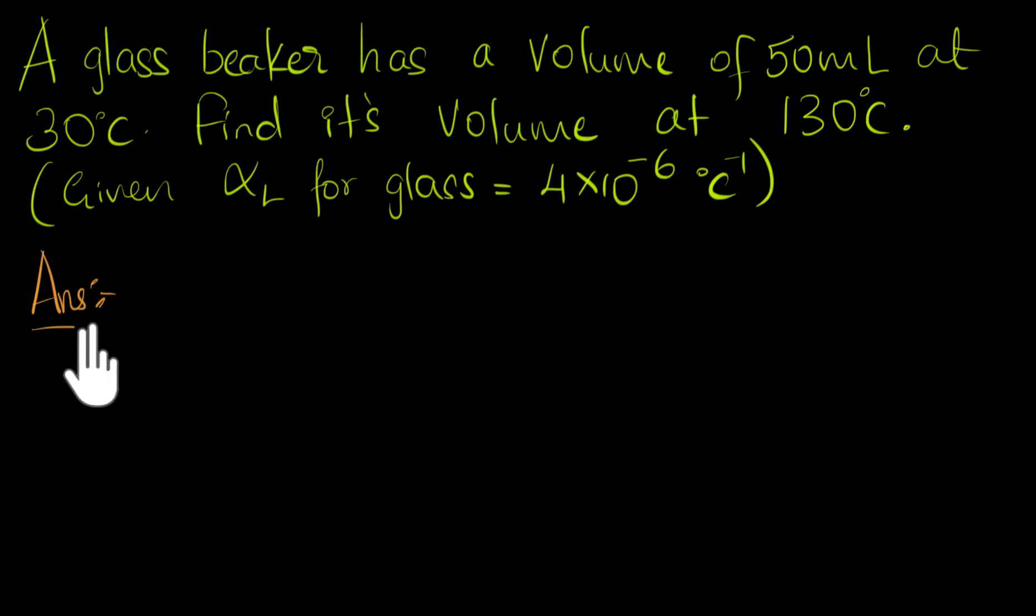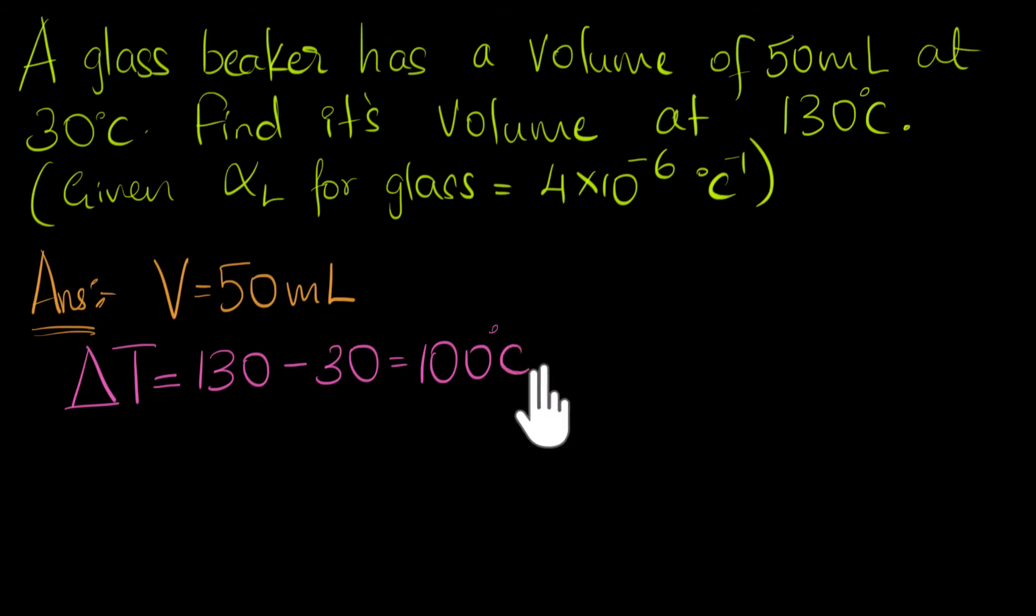Let's write down what's given to us. We've been given the volume of the glass, so we know volume is 50 ml at the temperature 30 degrees Celsius. We need to find its volume at 130 degrees Celsius. What's important for us is not the temperature, but the change in temperature. That's what causes expansion. So change in temperature is final temperature 130 minus 30, that is 100 degrees Celsius.